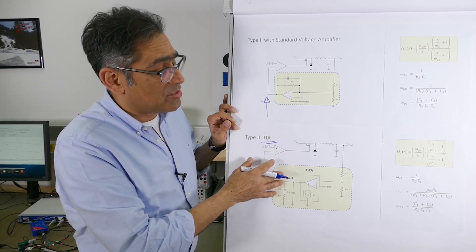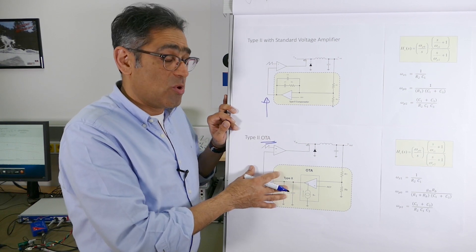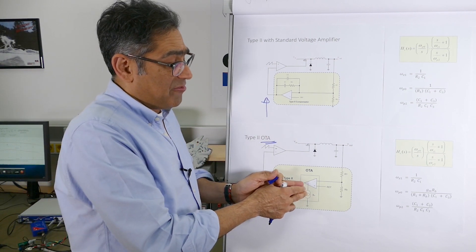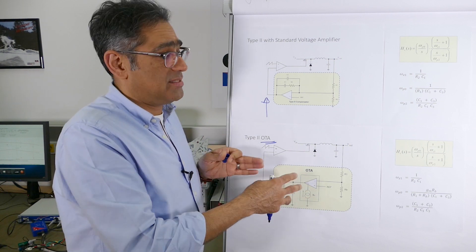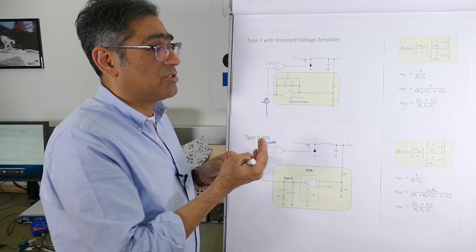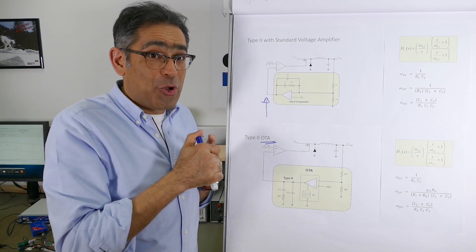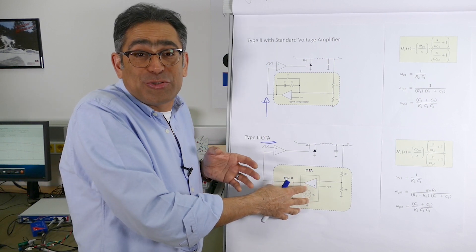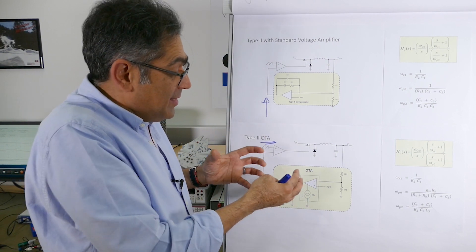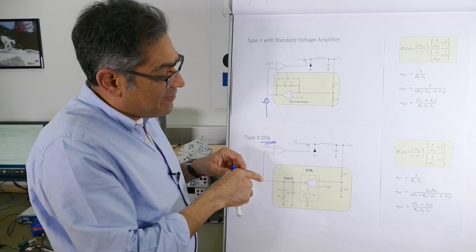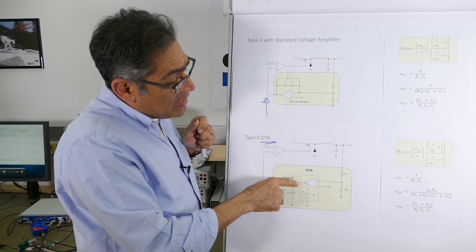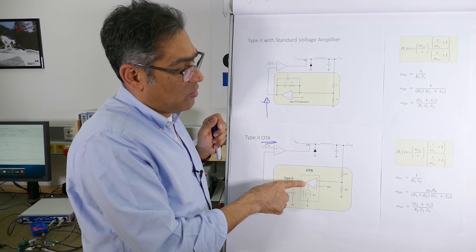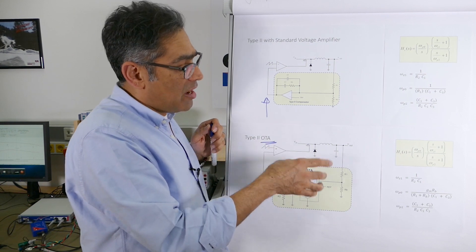I've put the two next to each other and I'm going to explain how this works. Effectively the output of this amplifier is a current source instead of a voltage source, and just because we don't practice with these during school we are a little bit alien to it, but it's actually very very simple. The output of this amplifier instead of being a voltage source is a current source.